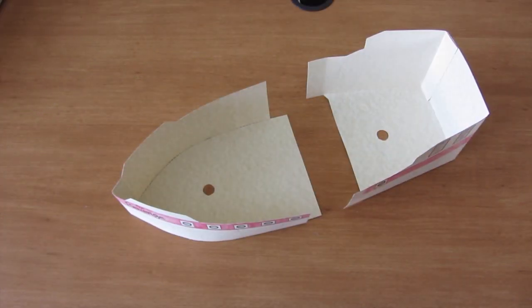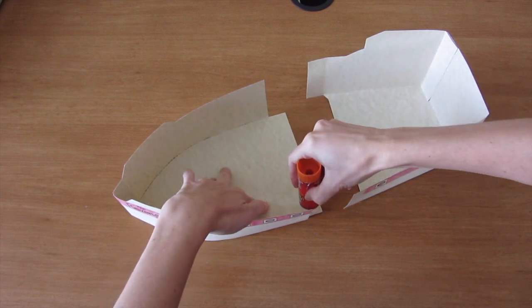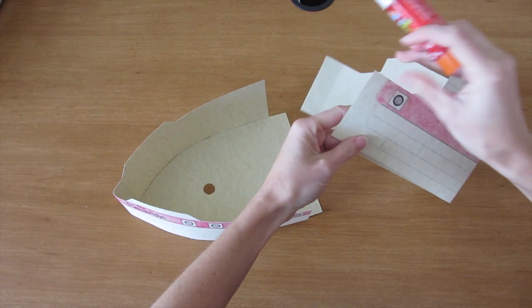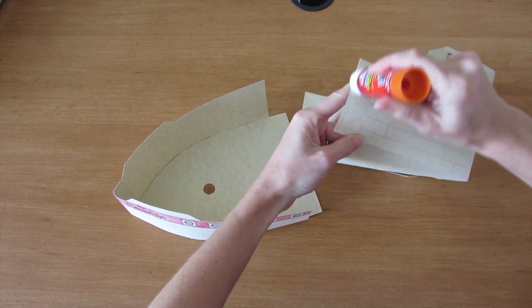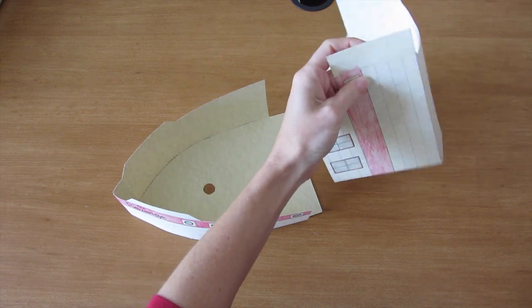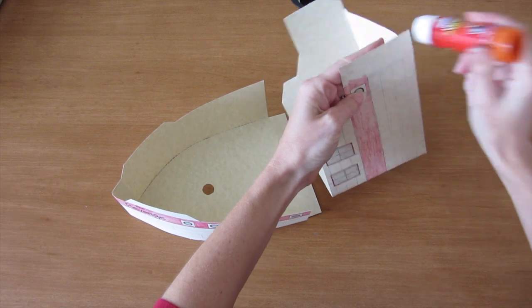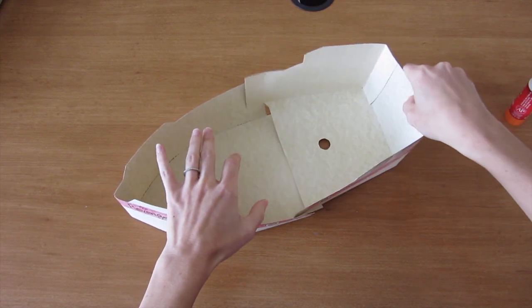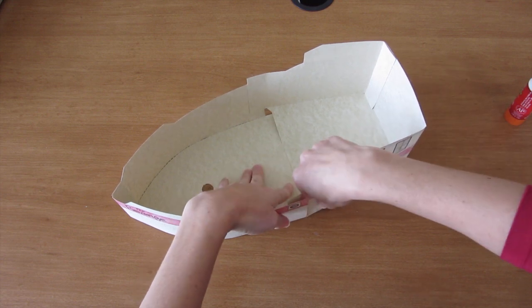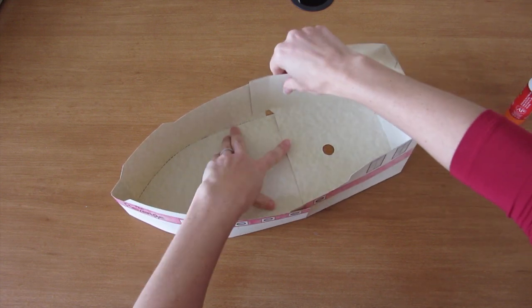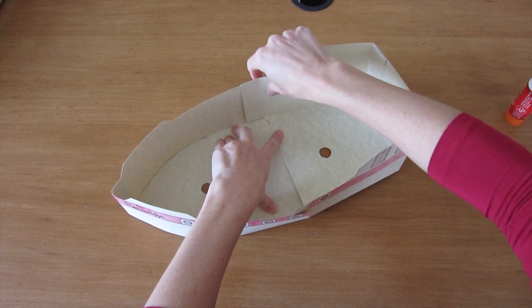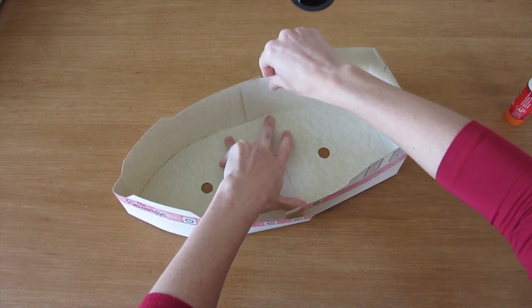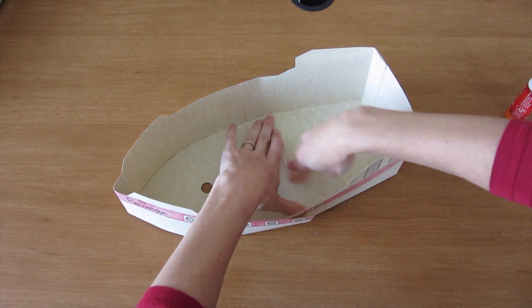To put the two halves of the pirate ship together, put glue in three places. Here's the first, here's the second, and here's the third. Slide the back half into the front half. Line everything up to where you want it to be, and then press it firmly.